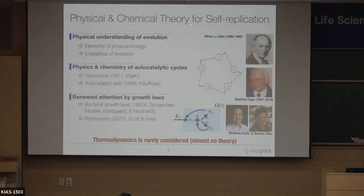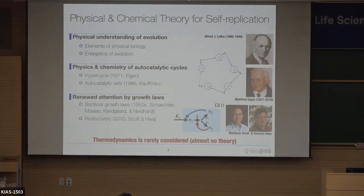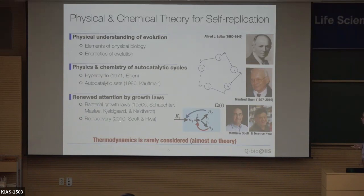We also have other attempts to understand self-replication and evolution from physical and chemical viewpoints. As far as I know, this can date back to the work by Alfred Lotka, who proposed physical biology and investigated the energetics of evolution. After that, we have the hypercycle by Eigen, and also the autocatalytic set by Kauffman. Very recently, there has been renewed attention to this topic due to the rediscovery of the bacterial growth law in 2010 by Scott and Fuhr, which was originally reviewed in the 1950s but clarified more rigorously by them.